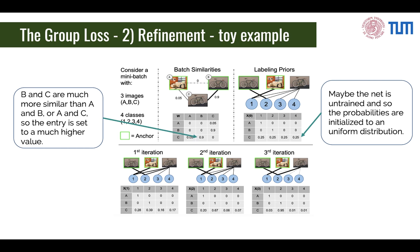What our method does is combine these two sources of information in a single matrix. We see that in the first iteration, the probability of sample C belonging to class 2 has increased quite a bit because image B, which is similar to image C, belongs to class 2. Similarly, we see a tiny increase in its probability for class 1, because while not very similar to A, there exists some similarity that contributes to this increase. The probability for the other two classes has decreased. By continuing this iterative procedure, we see that in the end, C converges to label 2 with almost total certainty.